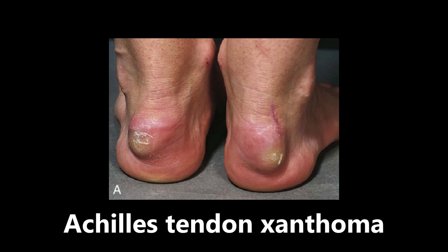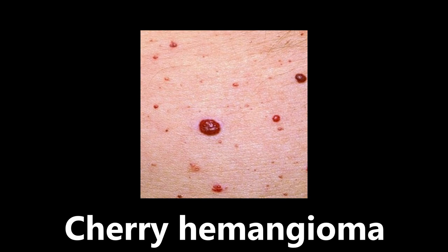This next picture is going to be an example of a cherry hemangioma. These are dome-shaped, bright, ruby red, painless papules. You can see one right in the middle of that picture. Remember, they are painless and usually benign — they're not going to cause any problems. Some patients can get them removed if they like, and sometimes they may go away on their own. If you see this picture, think cherry hemangioma.